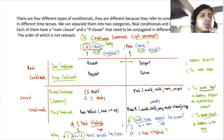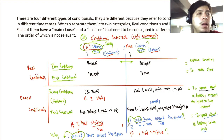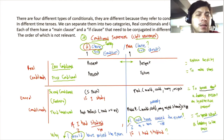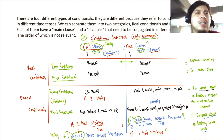There are four types of conditionals. The zero and first are real conditionals — they talk about reality and plans. All conditionals have two clauses: the if clause states the condition, the main clause states the result. Neither is more important — you can start with either. The zero conditional has both clauses in present; the first has the if clause in present and the main clause in future.